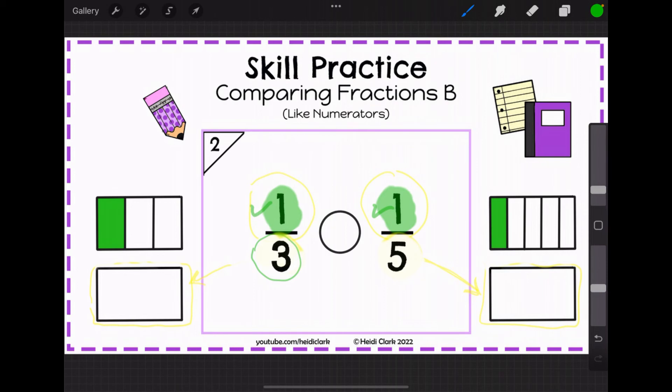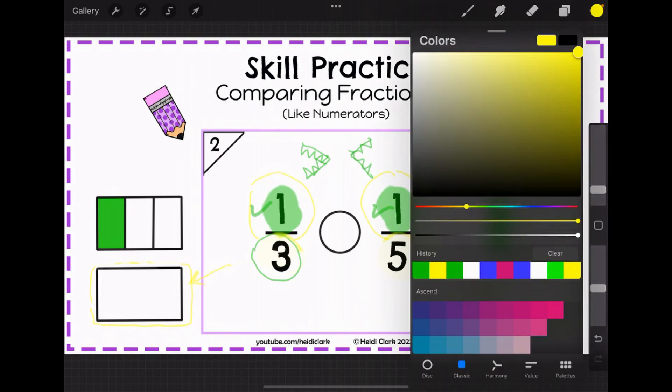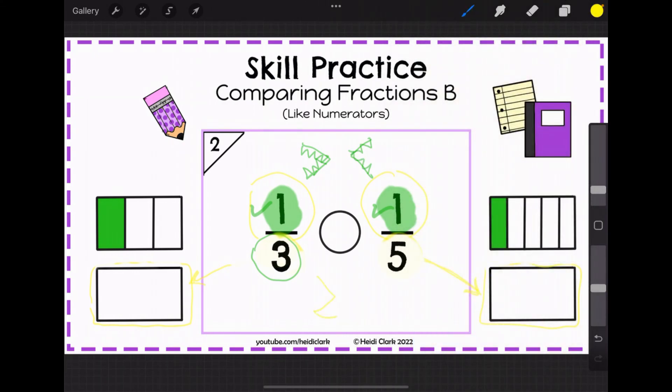When you draw your greater than less than symbols I like to think of them as little alligators with teeth and they're going to eat the bigger fraction. You can also think of it like a Pac-Man and Pac-Man is going to eat the bigger fraction. So we're going to put it in the middle facing 1/3.